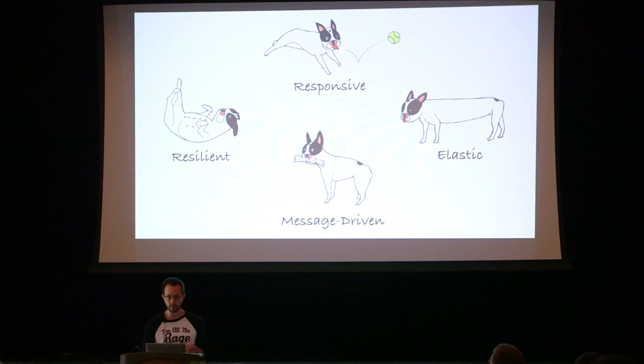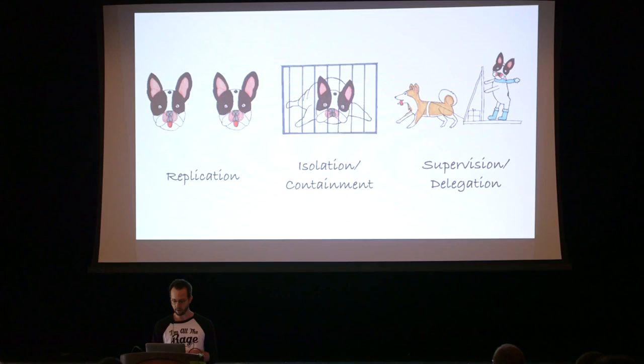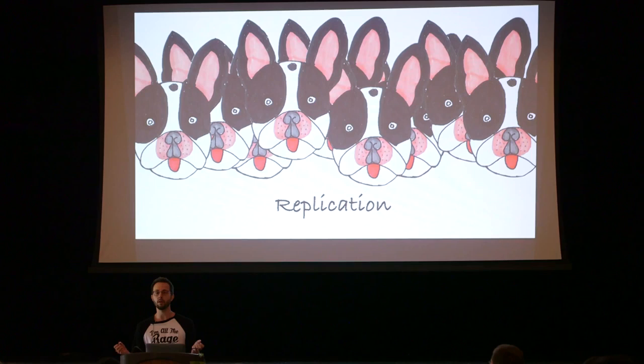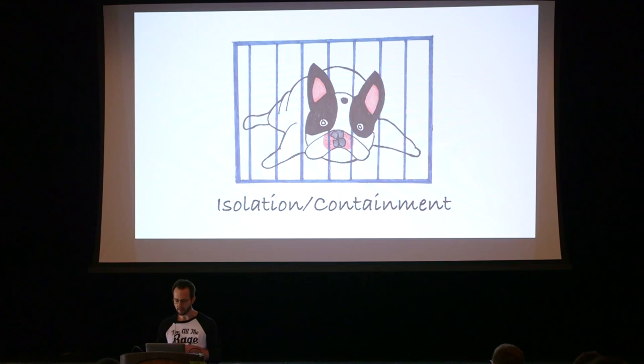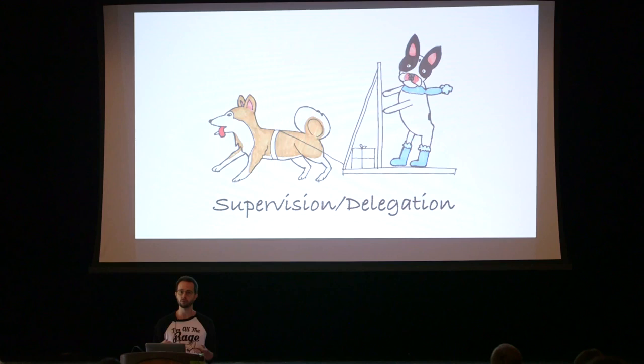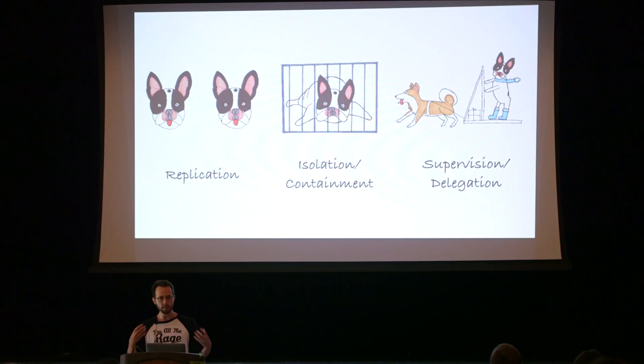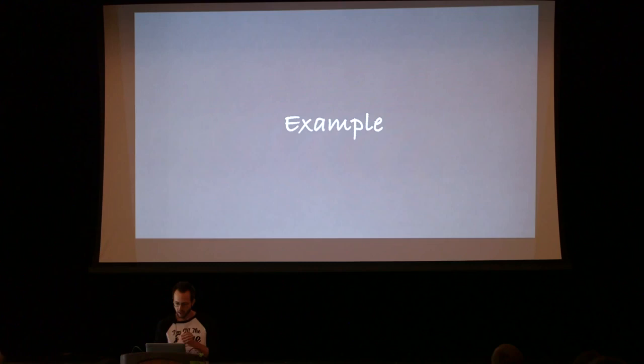Similarly, there's a set of connected strategies in reactive systems that are often used. First is replication: having the same process running in two different locations independently, which may also apply to data at rest as well as data in motion, such as in a distributed file system. The next strategy is isolation or containment — not having your errors propagate out of a bounded, known scope. The third strategy is supervision or delegation, which involves hierarchical control patterns. These are the strategies we'll see come up again as we implement our machine learning system in a reactive manner.